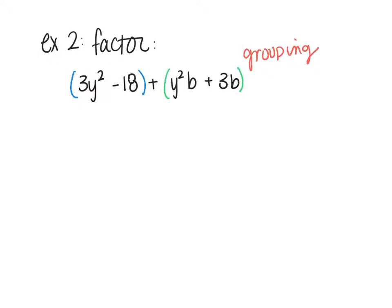Now, I find the GCF of the first two and pull it out. So, the GCF of 3y² and -18 is 3. And then I'm left with y² - 6. Carry down my sign in the middle, that's step 3. Step 4 says, alright, we'll do the same thing, but now with the second pair. Y²b and 3b. Well, I have a b in common, so I factor it out.